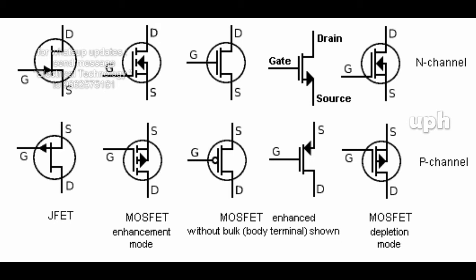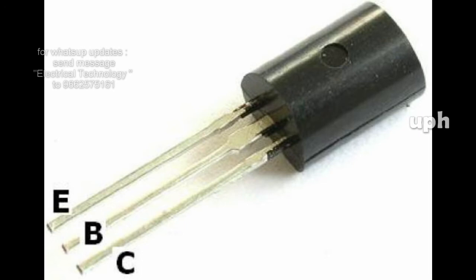BJT is used in many places. The BJT has two types of junctions: NPN BJT and PNP BJT. The BJT has 3 terminals: emitter, base, and collector.